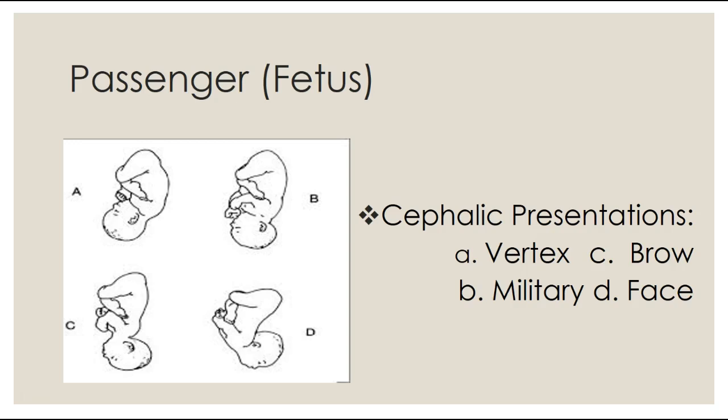In B, this baby is in a military position — the head is straight on with no flexion or extension. The occipitofrontal diameter is what is presenting, and the diameter presenting into the pelvis is much greater than in a vertex position. In C, this baby has a partially extended head and the largest anterior-posterior diameter is presenting — again, a larger diameter presenting into the pelvis instead of something small.